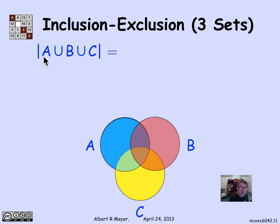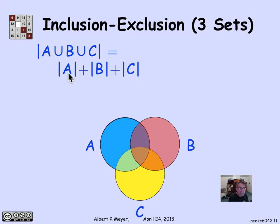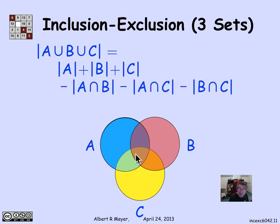What does inclusion-exclusion look like for three sets? For the size of A union B union C, here's a Venn diagram with all possible overlaps. The formula is: add up the sizes of A, B, and C. But that sum counts the lens-shaped region A intersection C twice, A intersection B twice, and B intersection C twice. So to get the sum right, subtract one occurrence each of A intersection B, A intersection C, and B intersection C, so those items are counted only once.